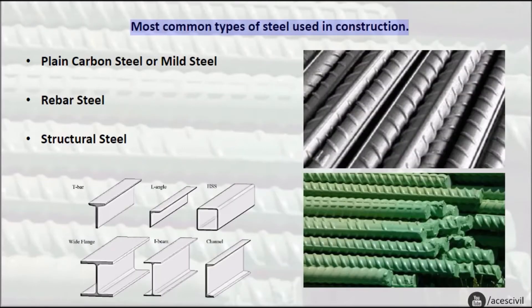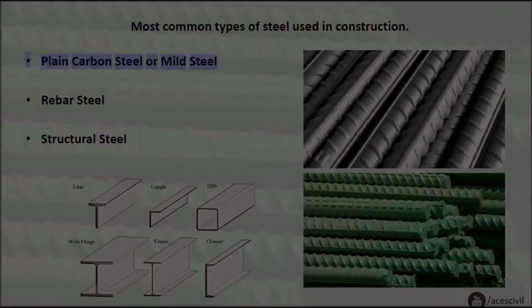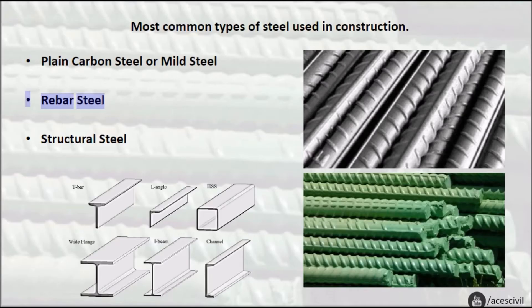Most common types of steel used in construction: Plain carbon steel or mild steel, Rebar steel, and Structural steel.